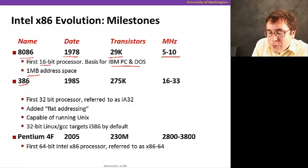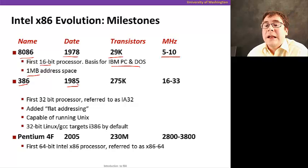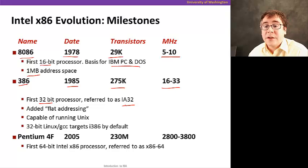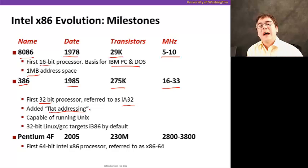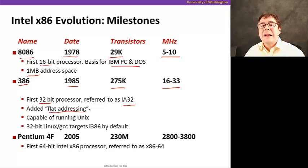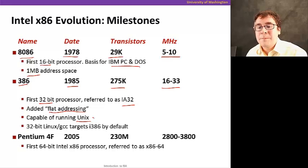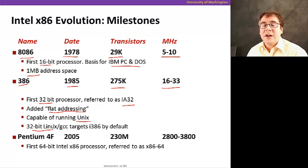A major step was the 386, introduced seven years later in 1985, which had 10 times as many transistors and ran about three times faster in clock frequency. It was the first 32-bit microprocessor, referred to as the IA32. It had a flat addressing mode, meaning you didn't have to divide memory into segments — you had a single address that could point anywhere in memory, making memory management much simpler. This machine was also capable of running Unix, very similar to Linux today. 32-bit Linux GCC targets the 386 by default, making it a very important architecture.